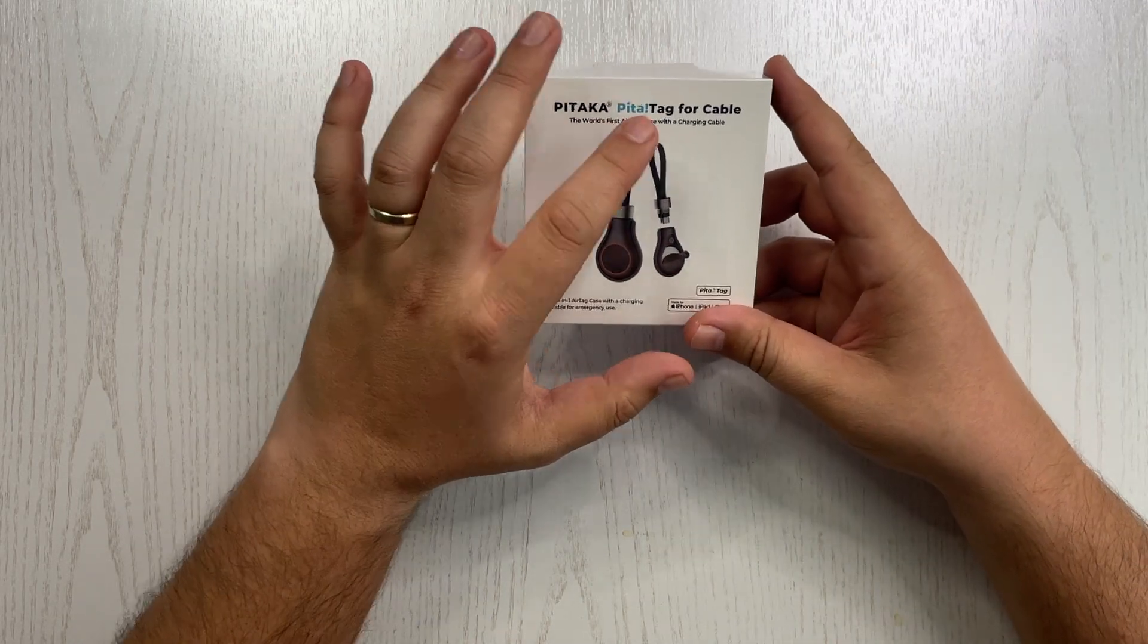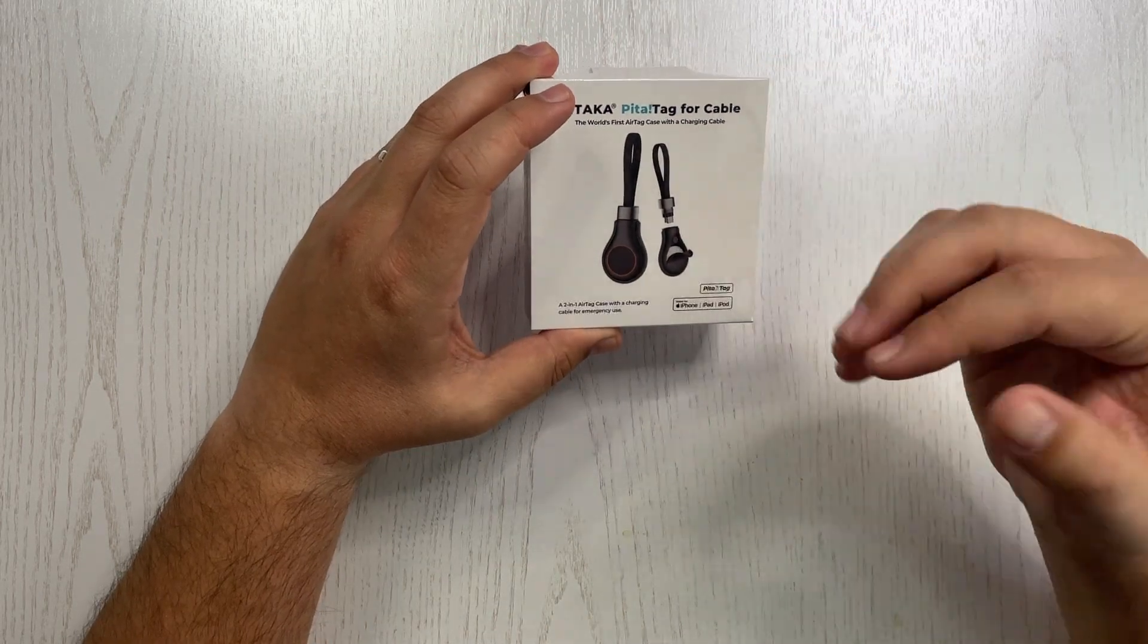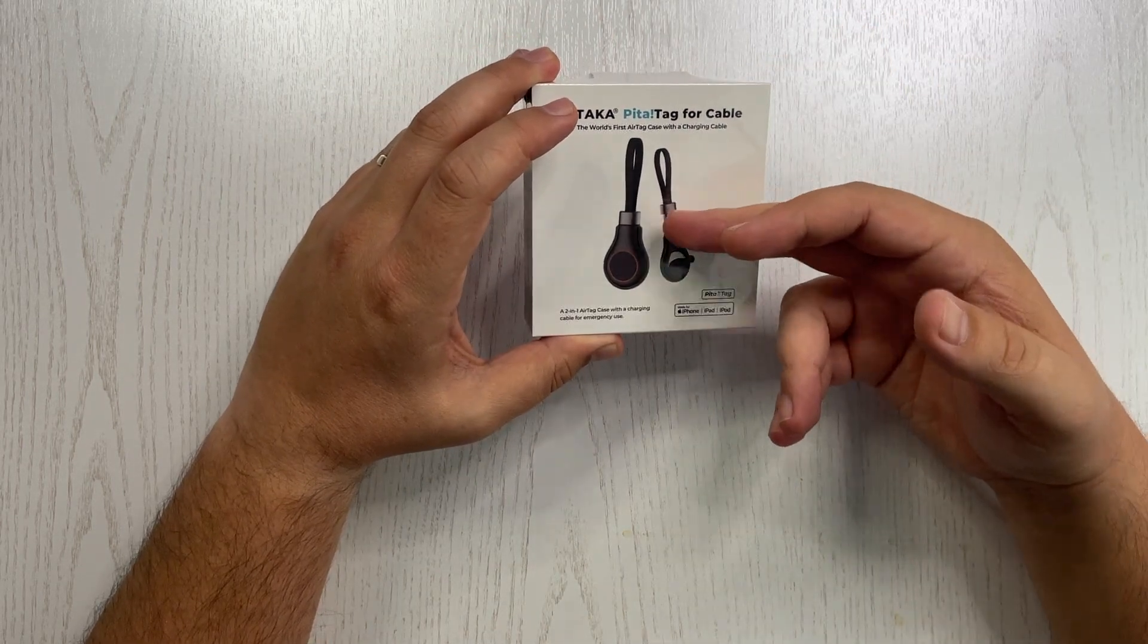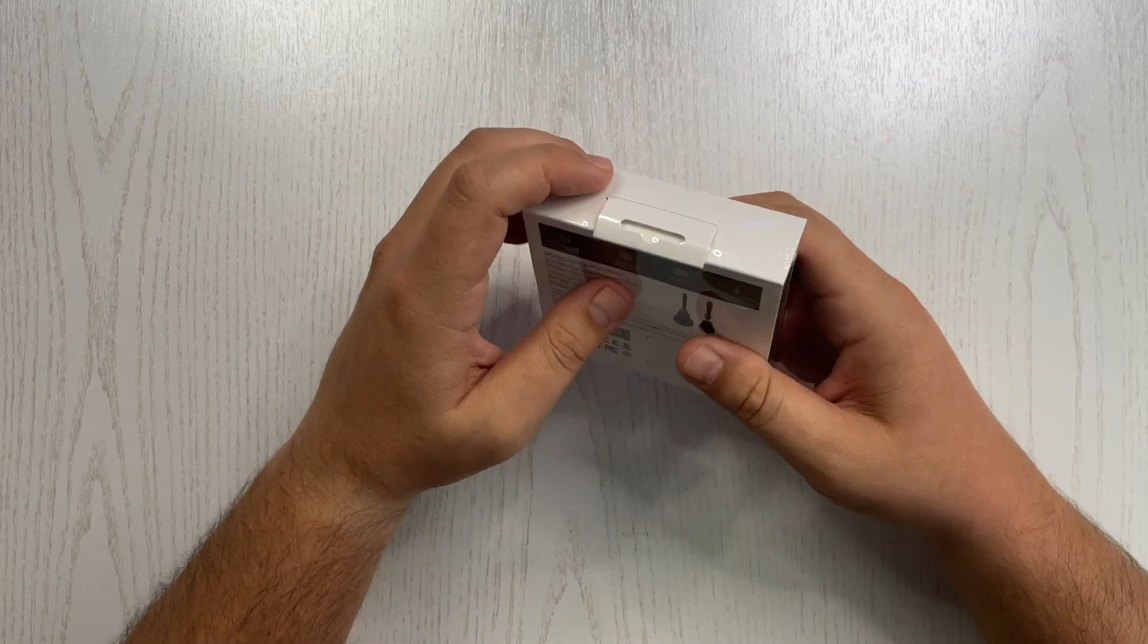So this is the Pitaka Pitatag 4 cable. What you can expect from this product is to add a USB-C to lightning cable to your AirTag. Let's open the box.